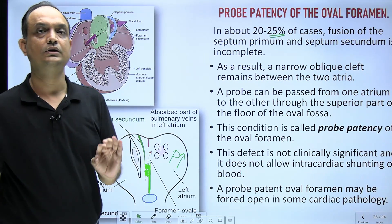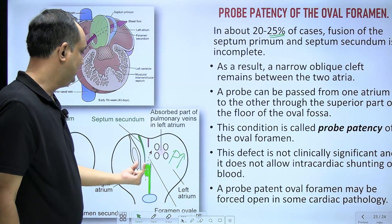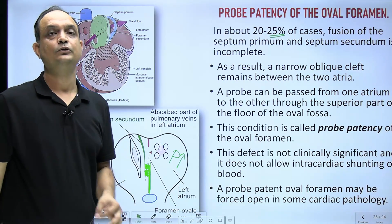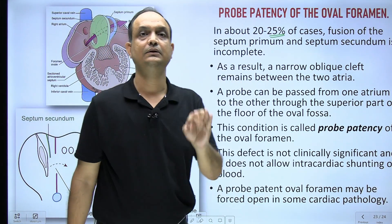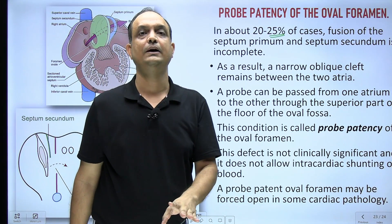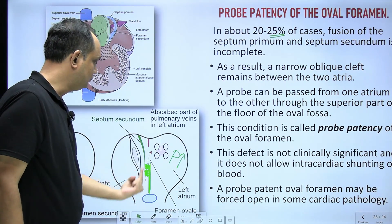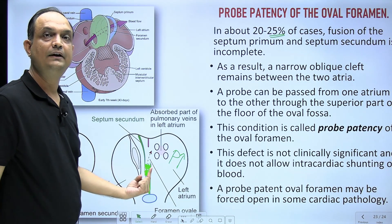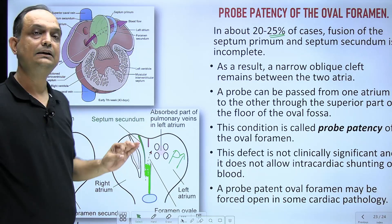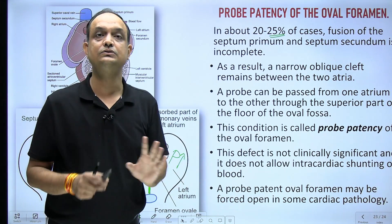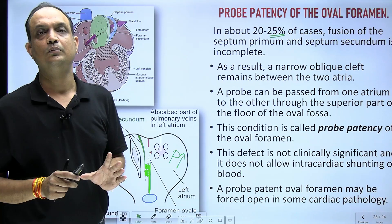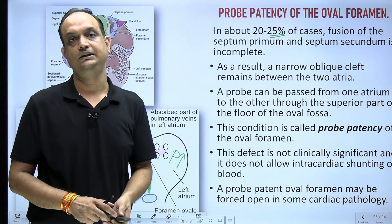If you do not disturb this patency, with time there will be anatomical fusion. Probe patency means that in 20 to 25% of cases, a probe can be passed between the lower end of septum secundum and the upper end of septum primum, but it does not create any clinical significance in the newborn because there is no shunting.